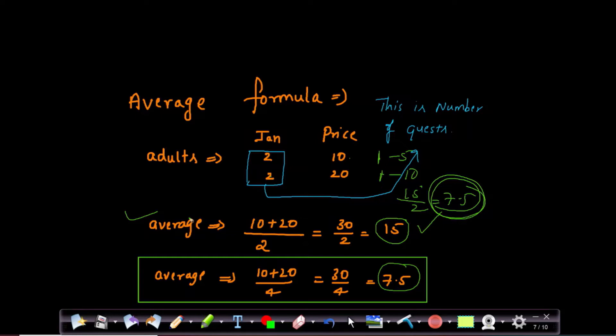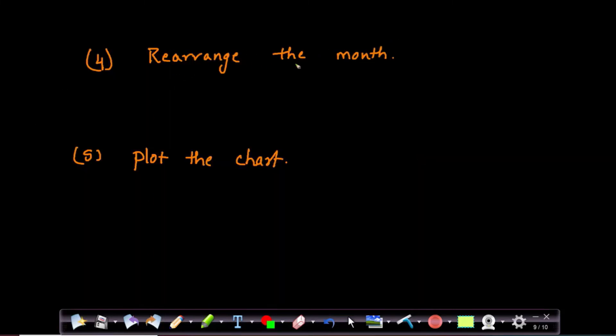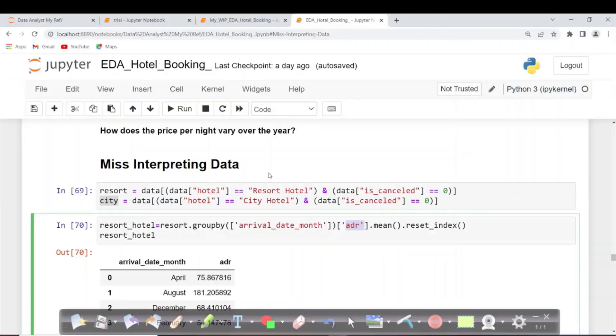Just to summarize, what are the steps? If you want to recollect on your own, please pause the video and try to write it on your own. This is not the only way to do it. There are multiple ways. This is just, I thought this would be the easier one. First step, create two different data frames. The second step is calculate the average. Keep in mind that to count number of visitors or guests. Third step is to merge the two different data frames using the common field. Fourth is rearrange the month. Fifth is plot the chart. It's easy. The moment you know the steps, it becomes very easy.